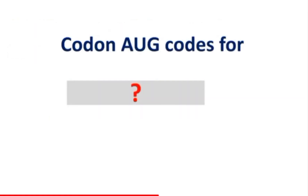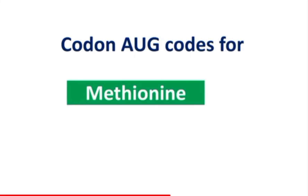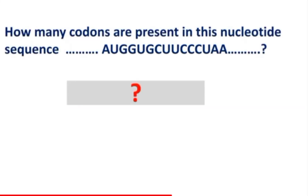Codon AUG codes for which amino acid? How many codons are present in this nucleotide sequence: AUG GUG CUU CCC UAA?